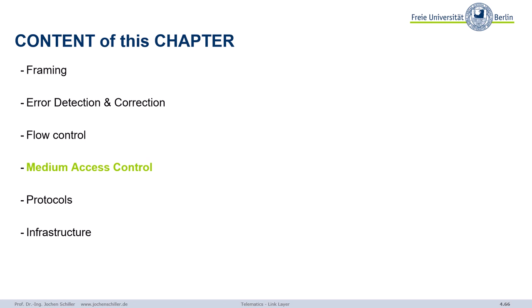Before we start with the next subsection, let's recap what we have so far. As we all remember, the physical layer delivers us a sequence of bits — whatever they mean, the physical layer does not care. So the first task, which was our framing, involved mechanisms for deciding when a frame starts and when it ends. We saw different methods, including simply performing the checksum; if the checksum fits, we can define that as the end. That was the first important task of the link layer: framing, because without frames, we cannot apply any of the other mechanisms.